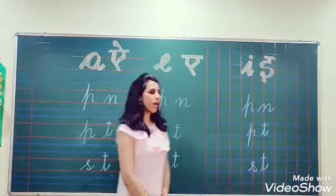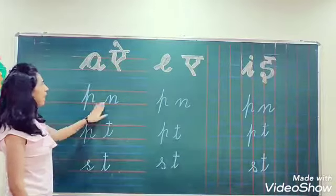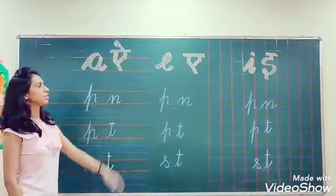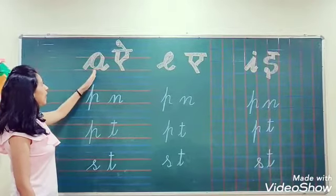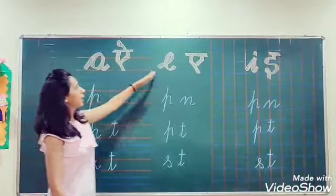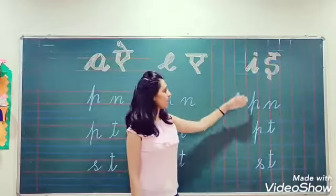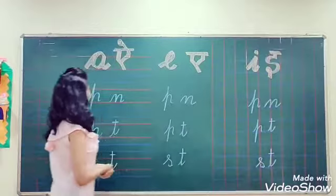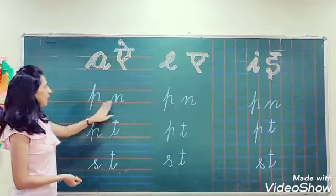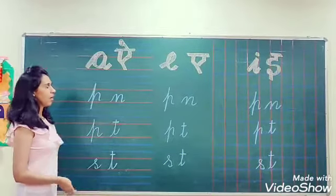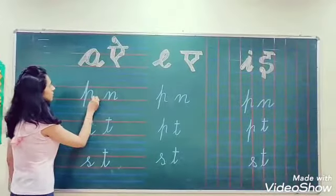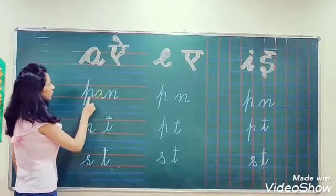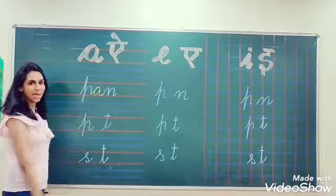Now I have some examples. As you can see, I have written the same words in three lines. But when I insert A, E, and I into them, the meaning will change. For example, I have T and N. When I insert A in that, it will become 'Pan'.